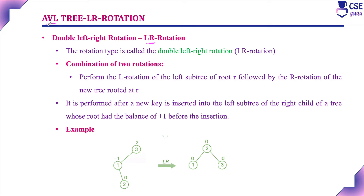An AVL tree is a balanced binary search tree, otherwise called a height-balanced binary search tree. It comes under the category of self-balancing binary search trees. Whenever you insert a new node into the AVL tree, the tree may become unbalanced, so we always need to maintain balance. We check that the balance factor should be either 0, +1, or -1. If this is the case, the tree is balanced.